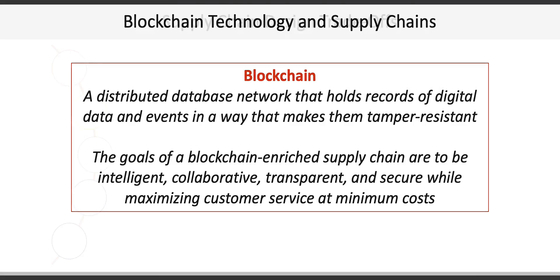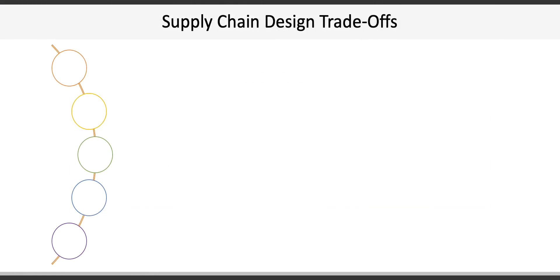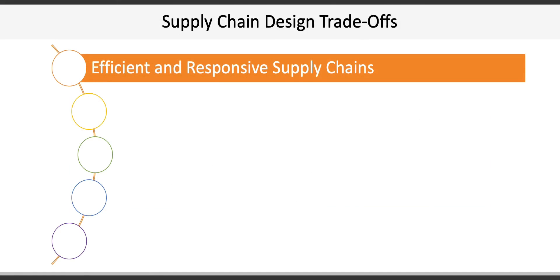The next topic focuses on five supply chain design trade-offs. The first is efficient versus responsive supply chains. Efficient supply chains are designed for efficiency and low cost by minimizing inventory and maximizing efficiencies in process flow. Responsive supply chains focus on flexibility and responsive service and are able to react quickly to changing market demand and requirements. Walmart has an efficient supply chain, whereas Apple has a responsive supply chain.